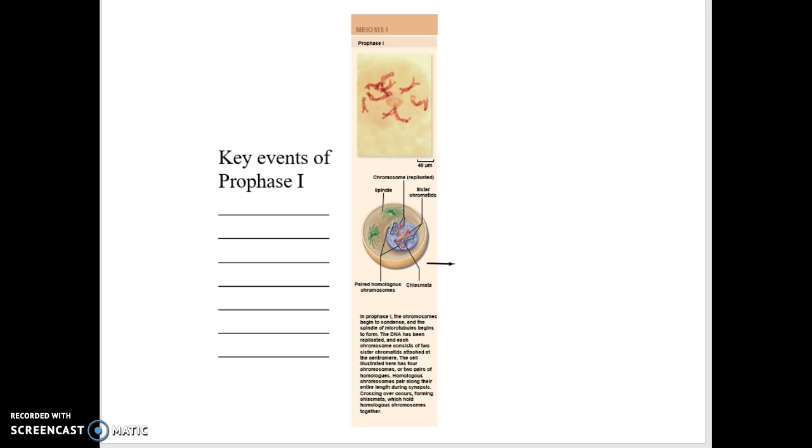First thing that happens, the chromatin, that big mass of DNA sitting inside that nucleus of that cell, starts to organize and turn into a chromosome.